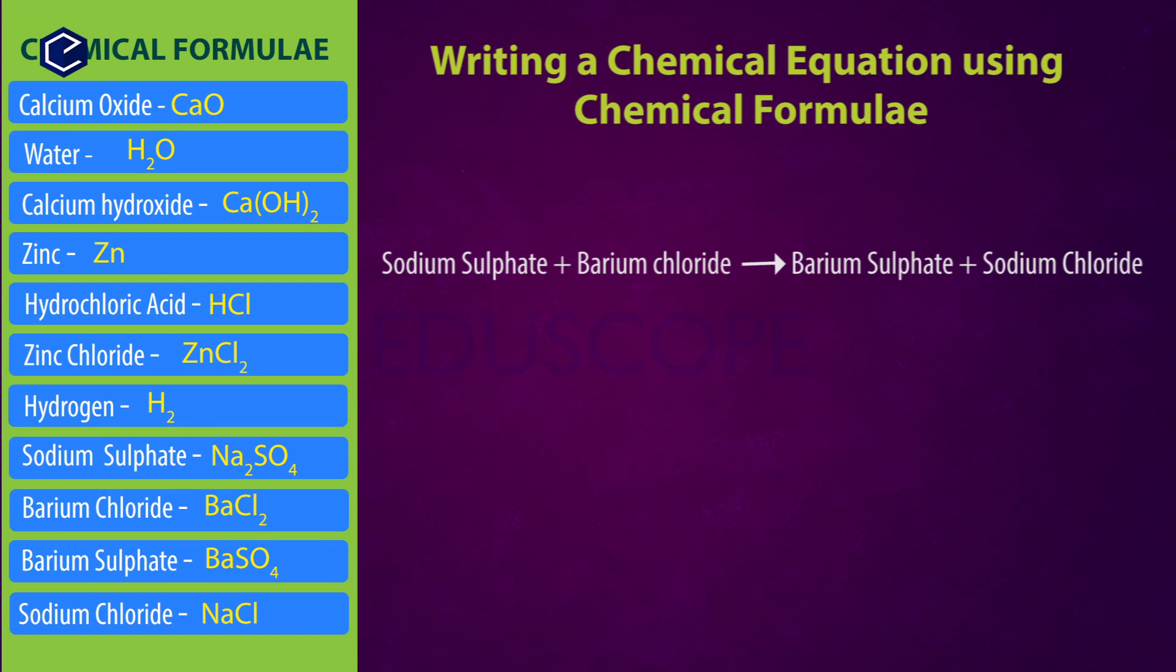Next chemical reaction: sodium sulfate reacts with barium chloride and gives rise to barium sulfate plus sodium chloride. So these are two reactants and two products. Sodium sulfate chemical formula is Na2SO4. This is sodium sulfate. So let us take Na2SO4 plus barium chloride. Barium chloride formula is BaCl2. So here we write BaCl2.